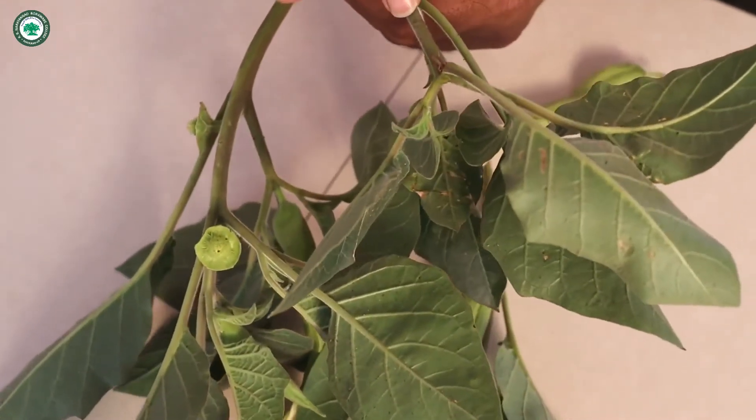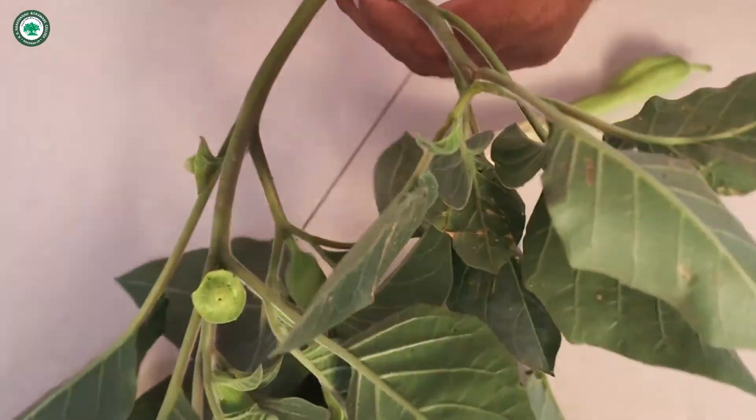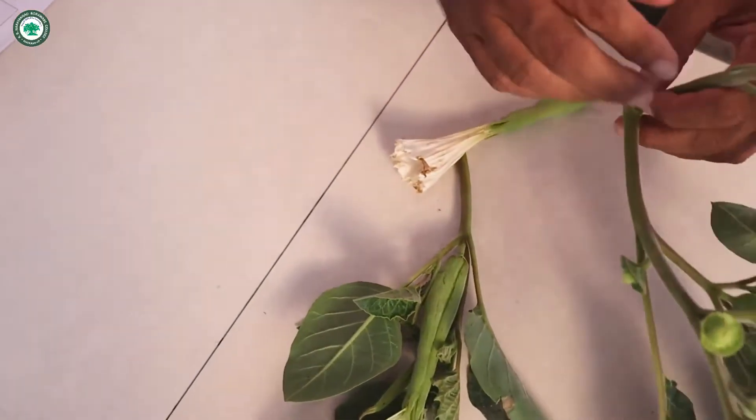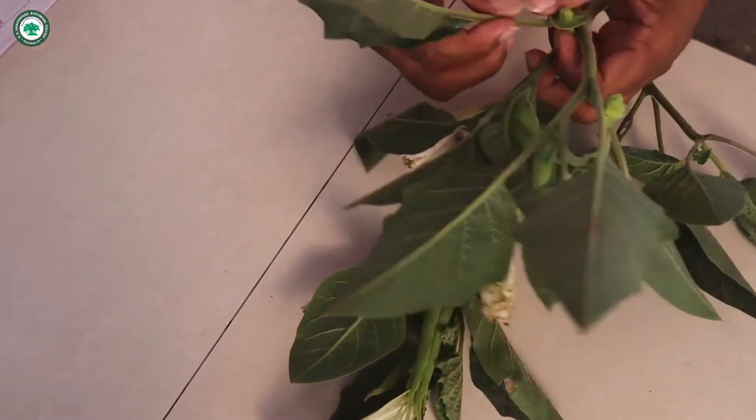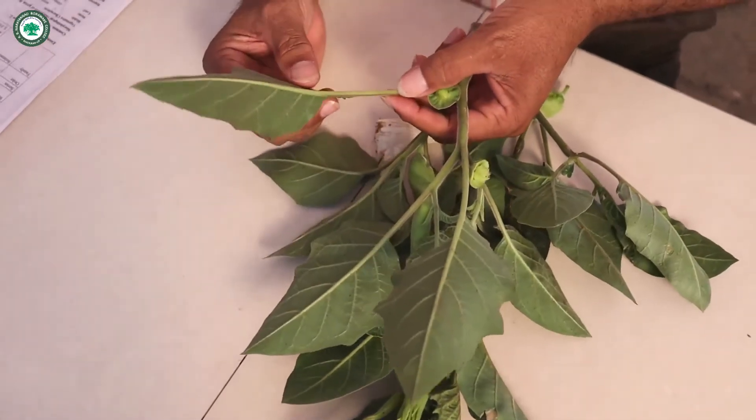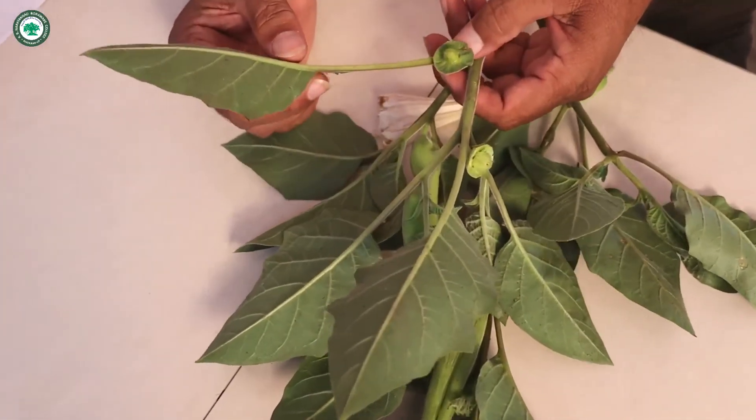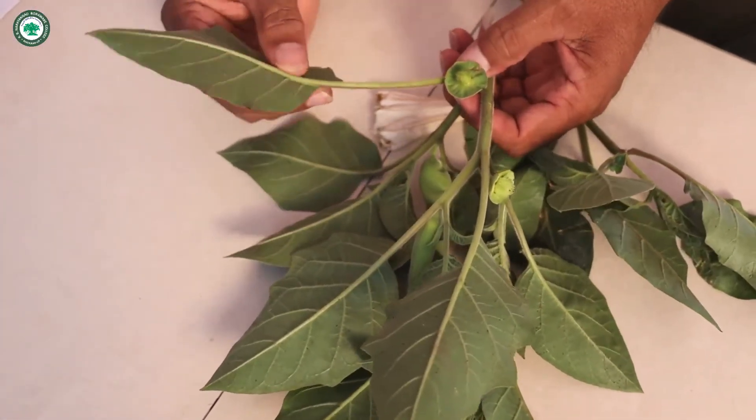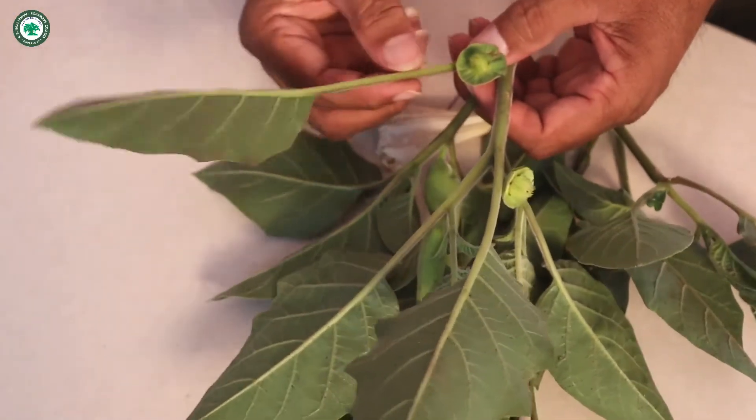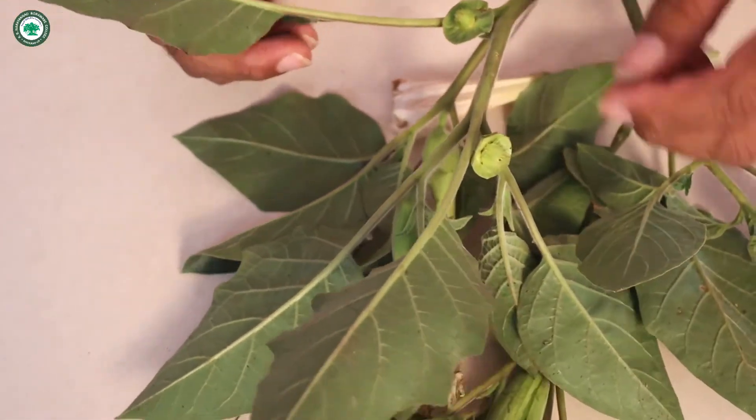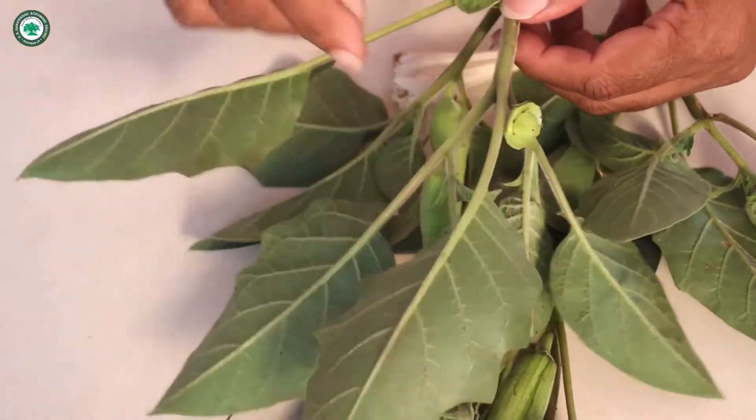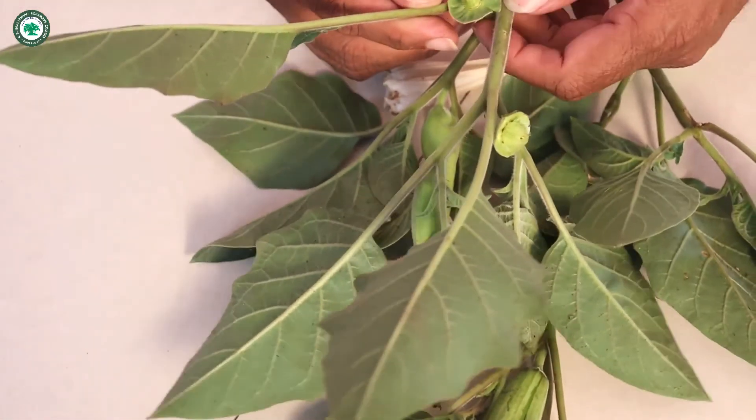That means there are some small hairs are there, so it is called as pubescent. Now the leaf, now the characters of the leaf, exstipulate because there is no stipule. So it is called as the exstipulate. It is a simple petiolate, petiole is there. Then alternate, leaves are alternate. So this is the leaf and this is the leaf, they are alternate with each other.